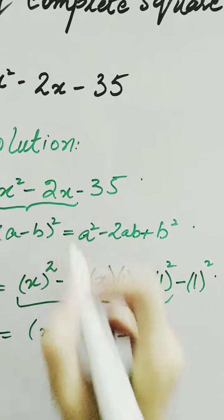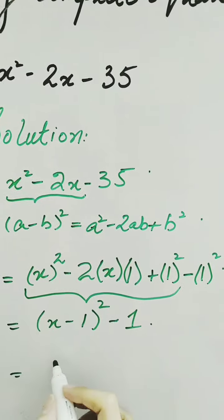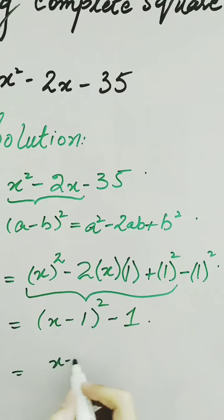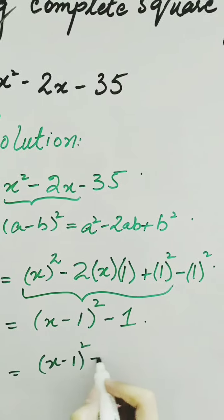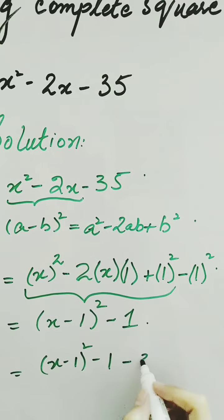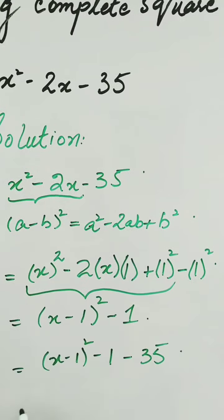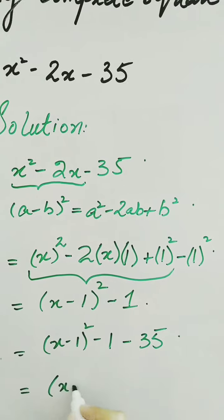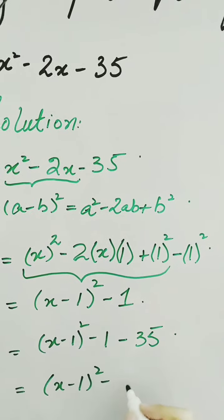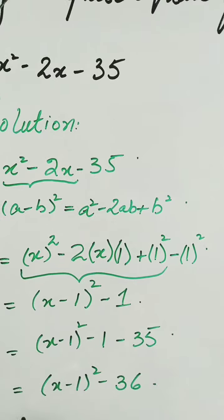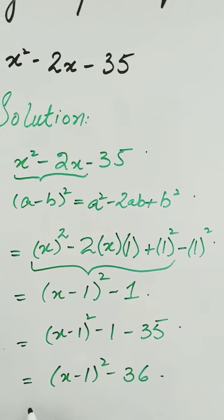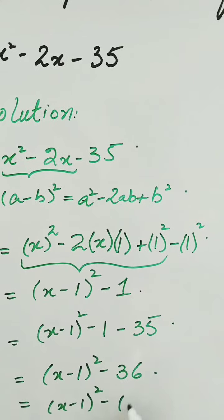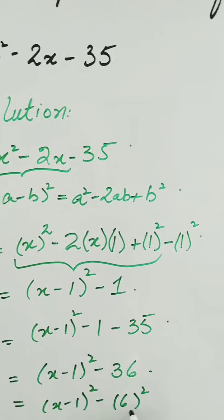Now we put this value in. We have (x minus 1) whole square minus 1 minus 35, which gives us (x minus 1) whole square minus 36. As we know that 36 is the square of 6, so we can write it as 6 squared.